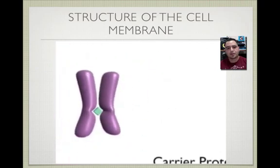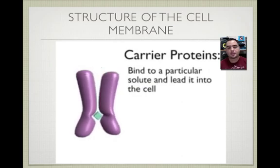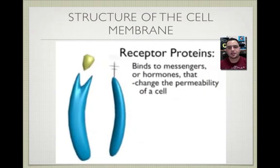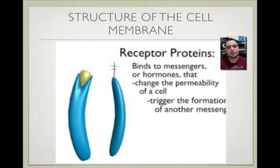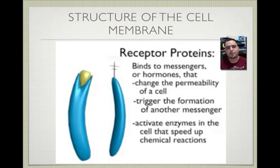Another type is the carrier protein, used in facilitated diffusion. It binds a molecule and changes shape slightly to allow things in. There's also a receptor protein — when a messenger or hormone lands on it, it allows other substances to enter the cell.